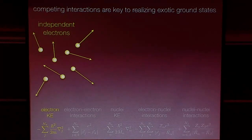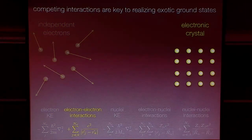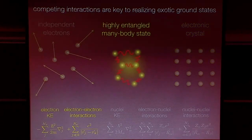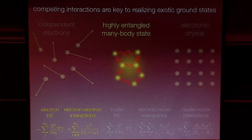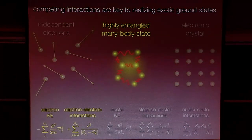The kinds of systems we're really interested in are ones where these interactions are more or less on an equal footing — not starting from one limit or the other, but with very comparable interactions. What you end up with is a very highly entangled many-body state, which is very difficult to compute from a theoretical standpoint. But that's also what gives rise to all these very interesting and exotic properties that we're interested in looking at.